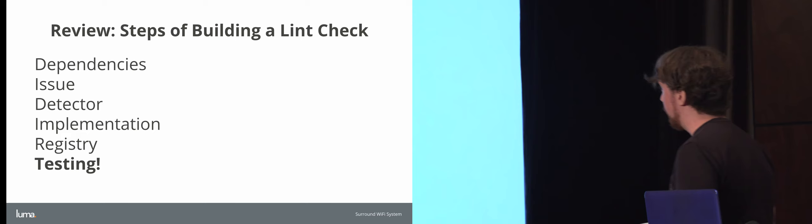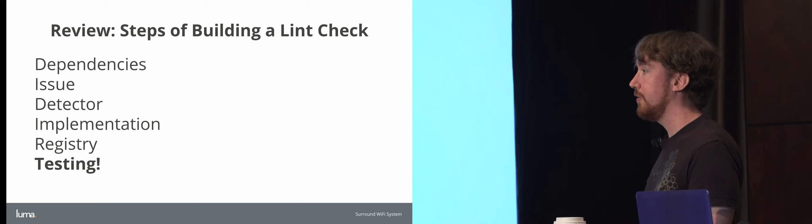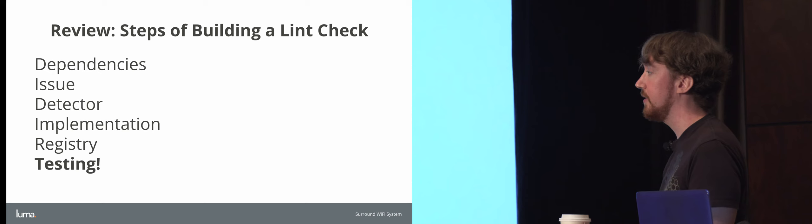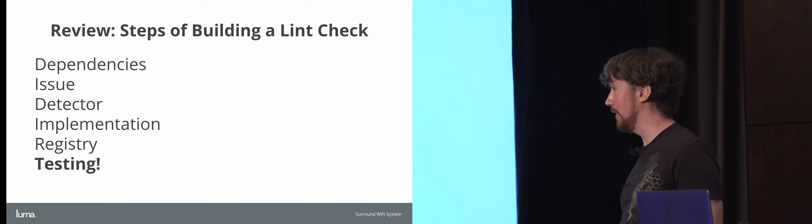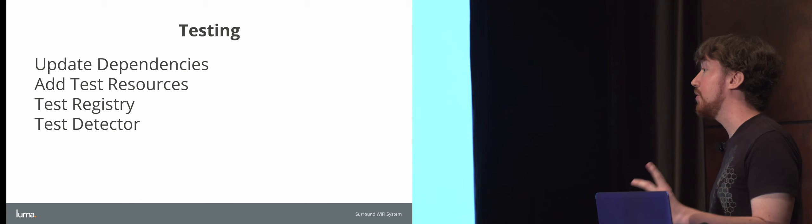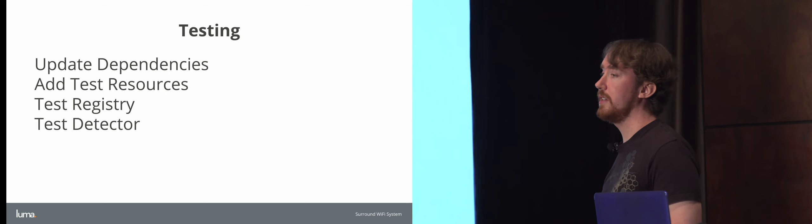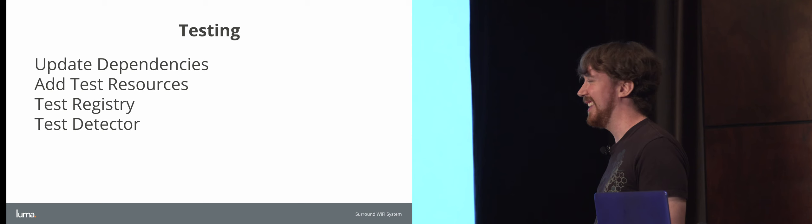We've seen how to update dependencies, create an issue, detector, implementation, and registry — all the pieces together make a Lint check. But testing is an important part of this process — it gives you verification that your Lint check works as you believe it does, and it's really easy. We'll add some test dependencies, add test resources which will be our positive and negative test case files. Then we'll test the registry as a sanity check, and test the detector, which is the interesting part of making sure our Lint check behaves as we want. The last thing we want is a static analysis tool that flags incorrectly.